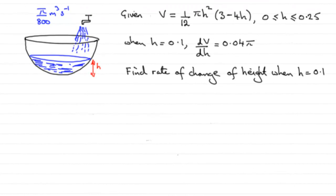Now, for this part of the question, we're told that the water is actually flowing into this bowl at a rate of π over 800 cubic meters per second. And we're asked to find the rate of change of height when h equals 0.1.